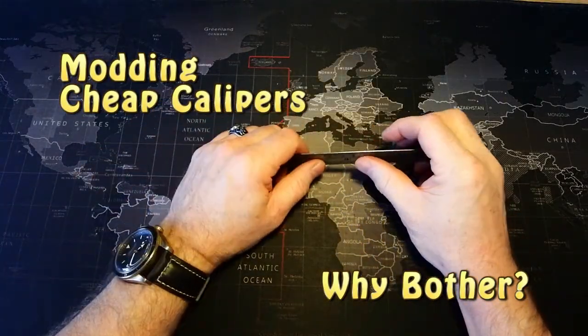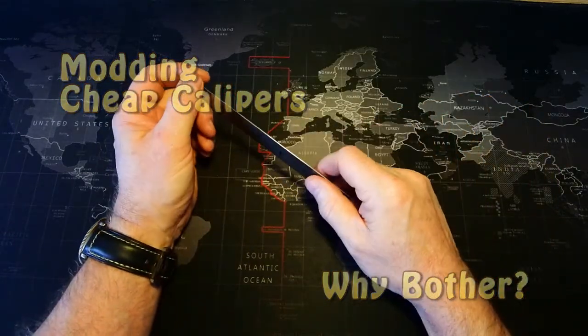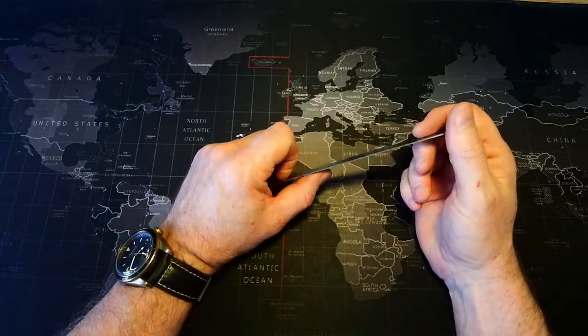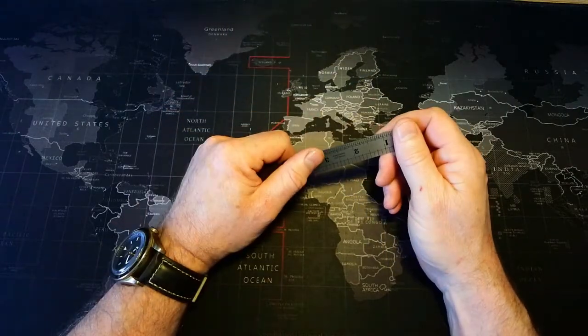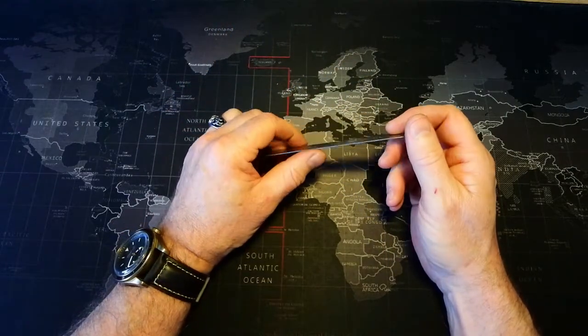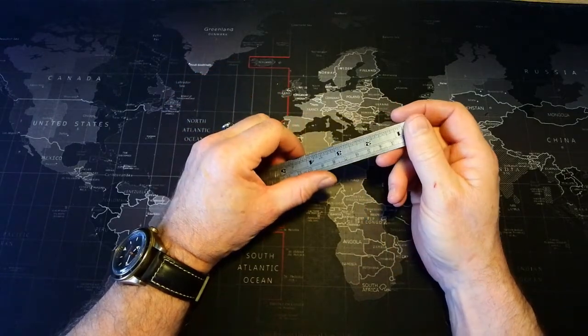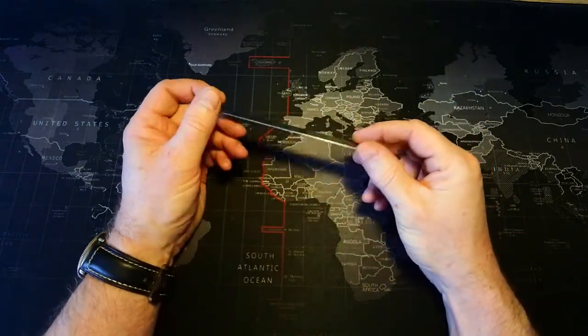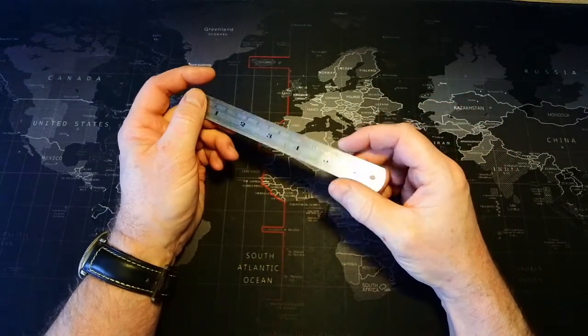About three years ago I posted a video on how to isolate the battery in a pair of cheap digital calipers. The main theme of most comments on that video was why would anybody even bother to do such a thing in the first place. I'm going to try to explain the usefulness of calipers and then demonstrate the downside of the cheapest calipers, which is why the batteries go flat.